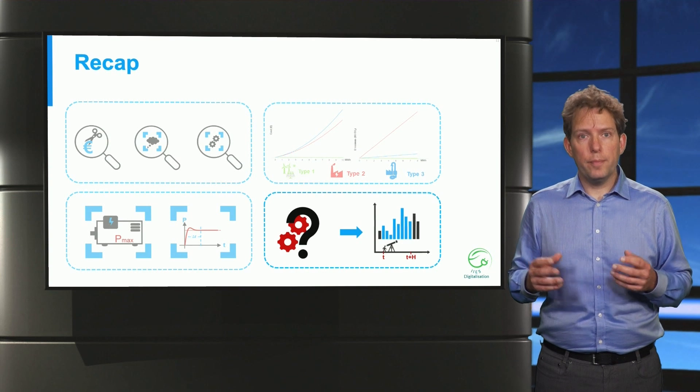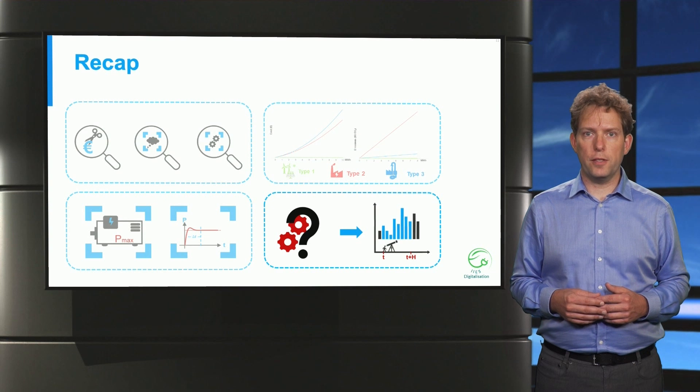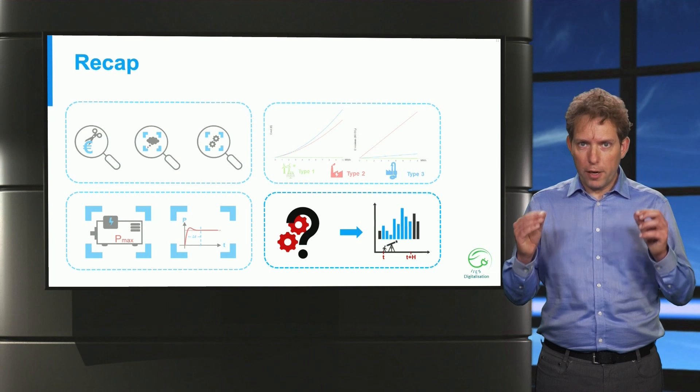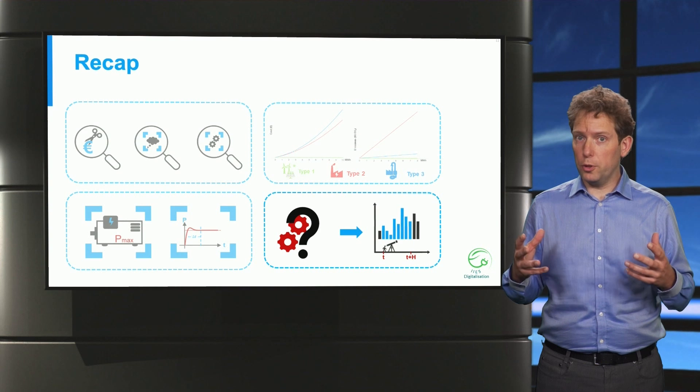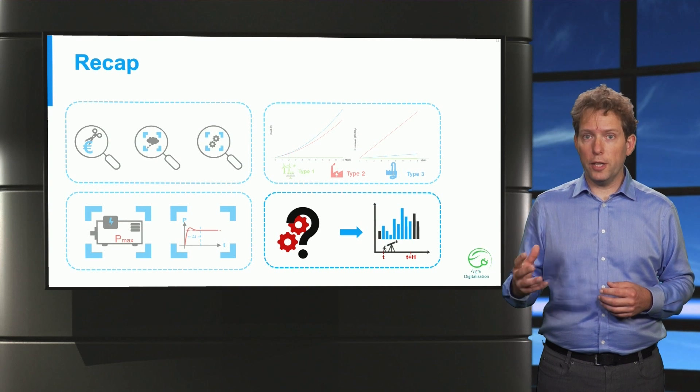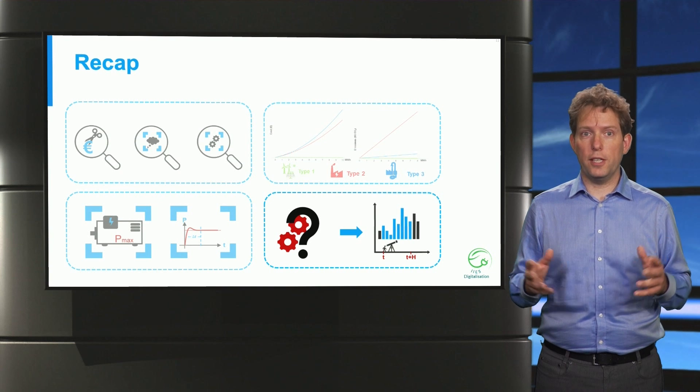The generator power output and its ramping limits are the most commonly considered restrictions on the generation units. And finally, you've seen the importance of using forecasts, especially when dealing with ramping constraints. It's of paramount importance to anticipate large changes in demand and renewable generation, so that you can dispatch other units on time. Because in the end, we do not want to sit in the dark.